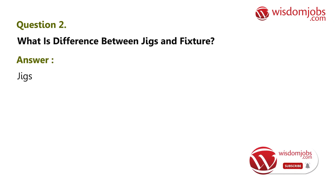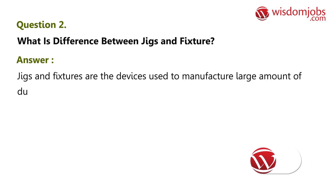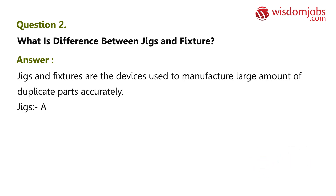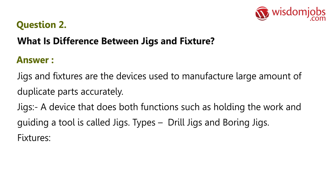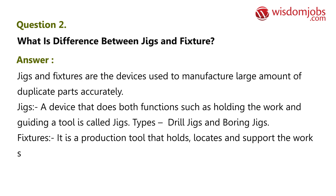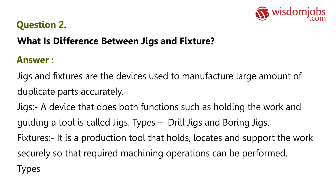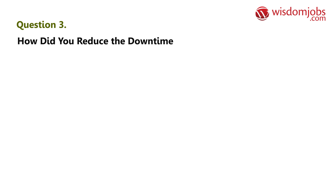Question 2: What is the difference between jigs and fixtures? Jigs and fixtures are devices used to manufacture large amounts of duplicate parts accurately. A jig is a device that does both functions — holding the work and guiding a tool. Types include drill jigs and boring jigs. A fixture is a production tool that holds, locates, and supports the work securely so that required machining operations can be performed. Types include milling fixture and profile fixture.